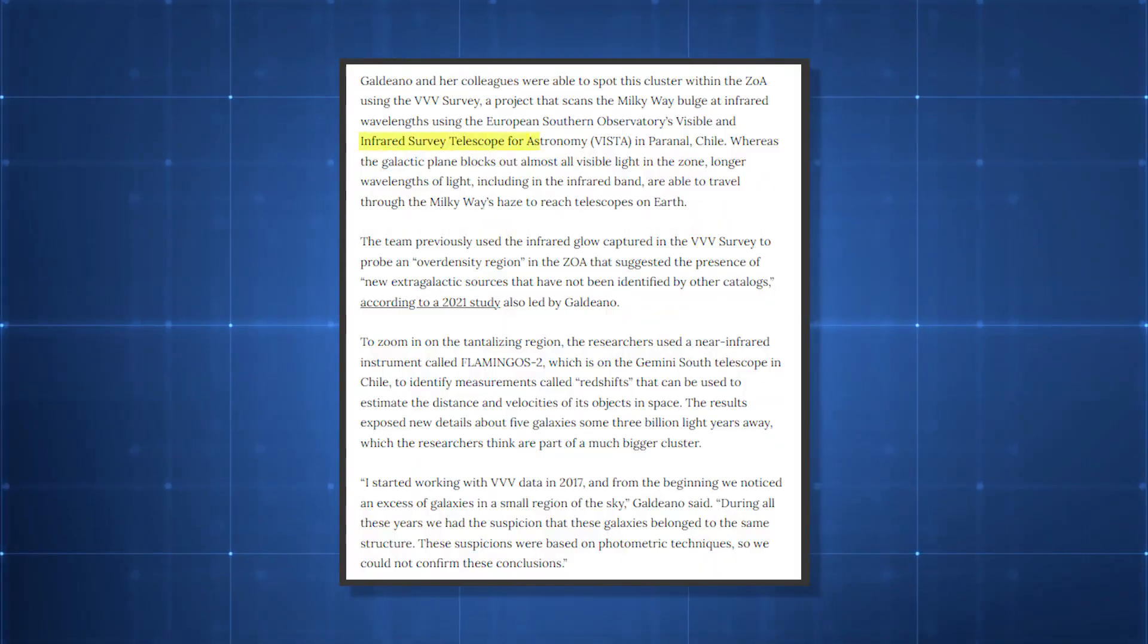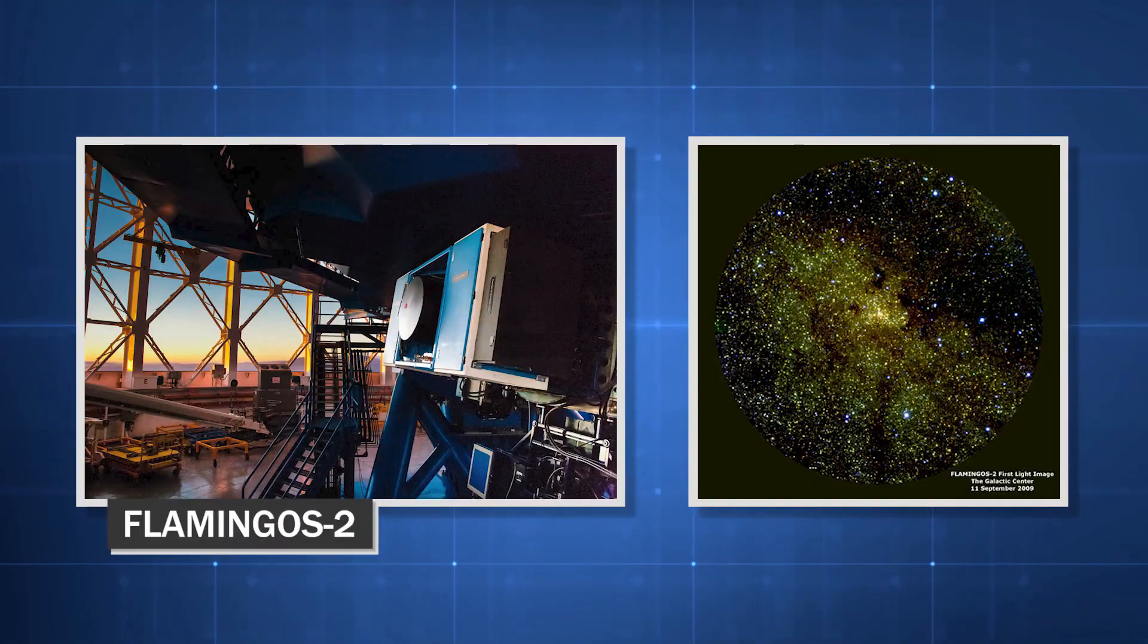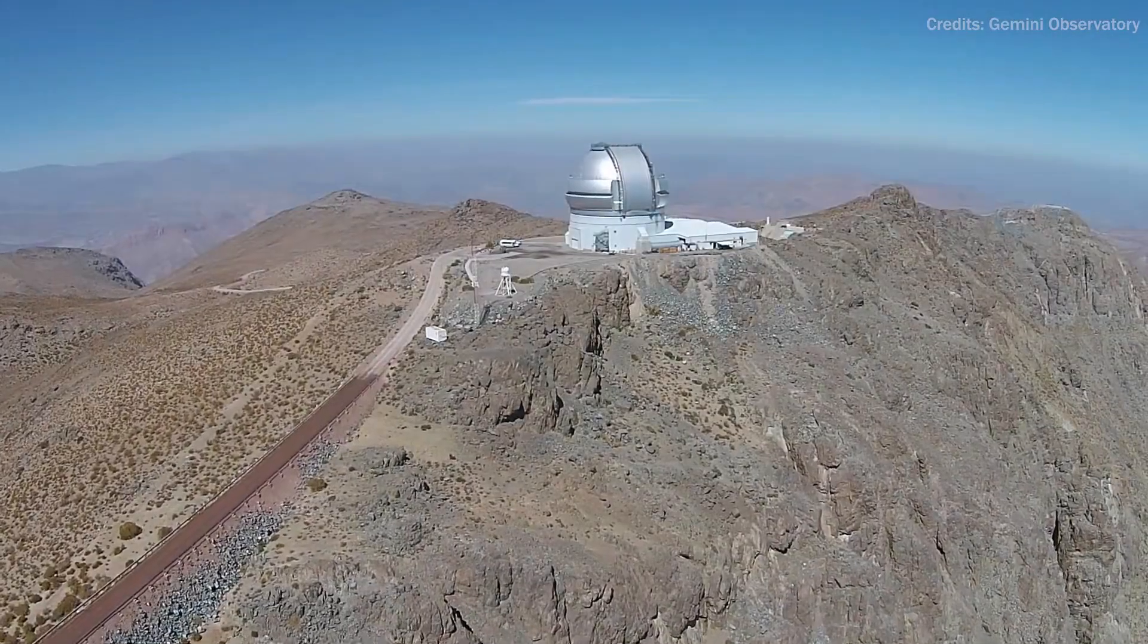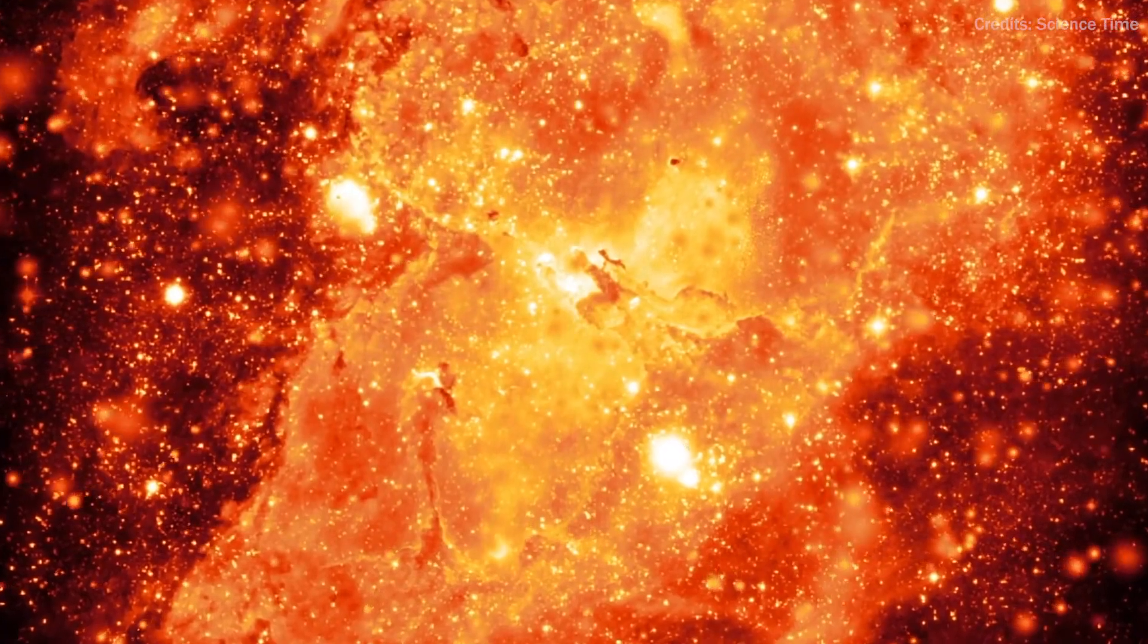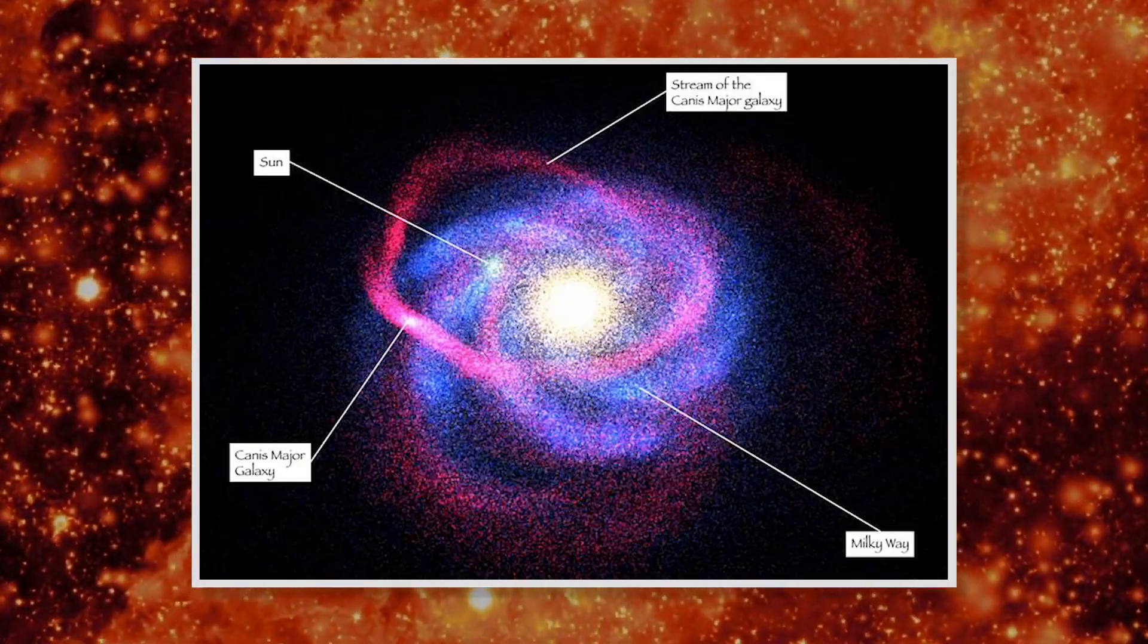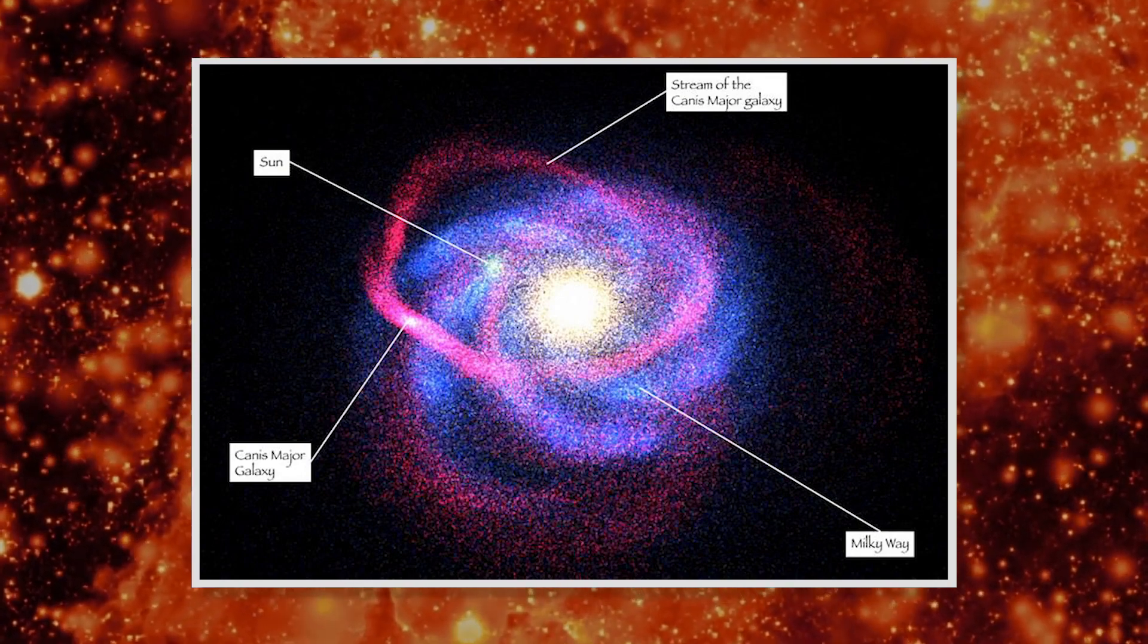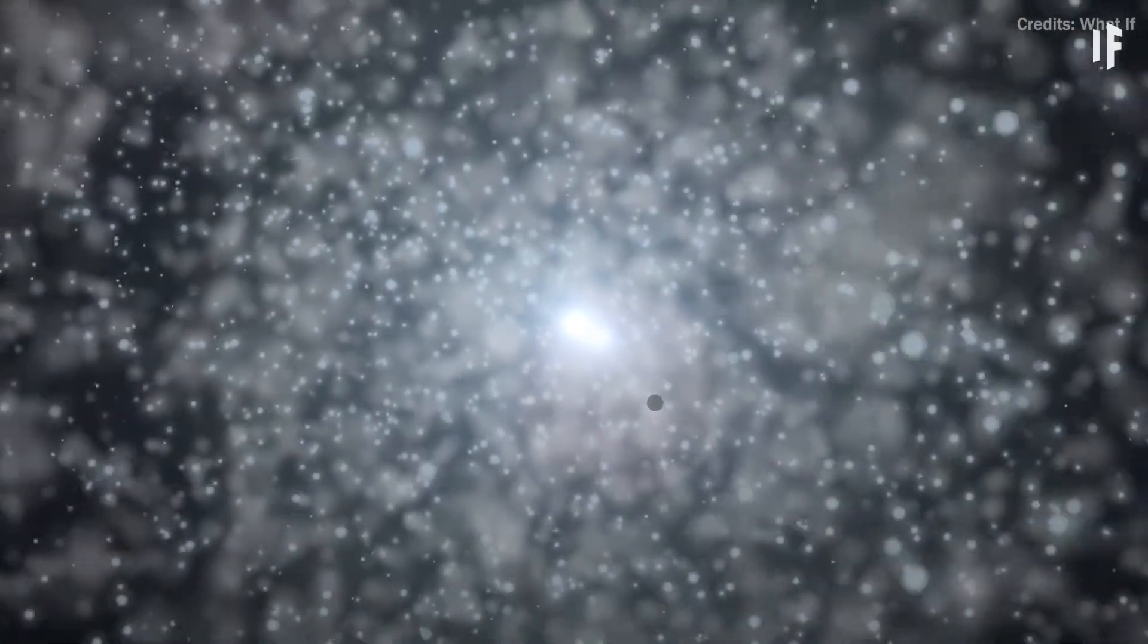The researchers made use of a near-infrared instrument called Flamingos II, which is housed on the Gemini South Telescope in Chile. This allowed them to zero in on the intriguing region. The findings provide fresh information regarding five galaxies located approximately 3 billion light-years away, all of which, according to the researchers, are part of a much larger cluster.